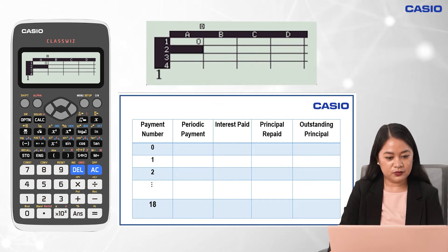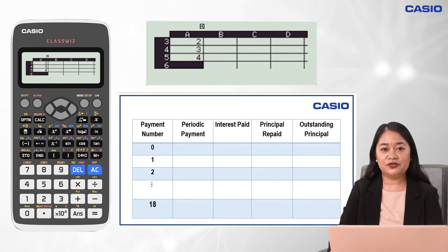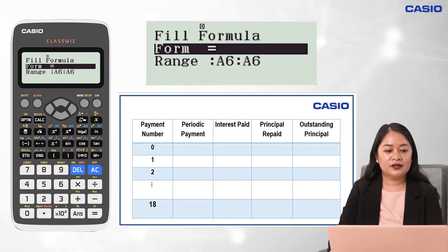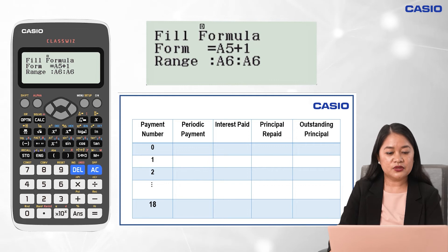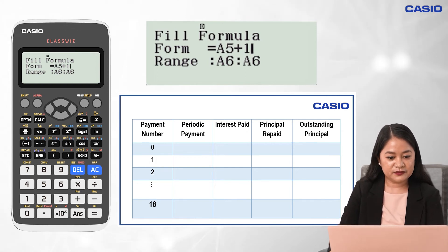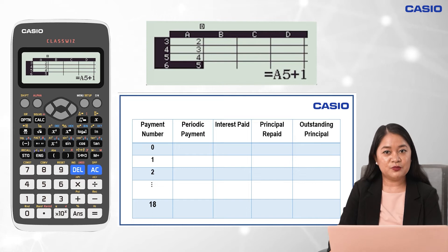Since it will take time to input each value manually, we can create a formula to automatically fill values down to payment 18. From cell A6, press Option and 1 to create a formula. For the form, input A5 + 1 by pressing Alpha, Negative Sign Button, 5, and Plus 1. For the range, use the Right Arrow Key and Delete Button to change it to A6 to A19. Press the Equal button twice. We now have the values from 0 to 18 payments.